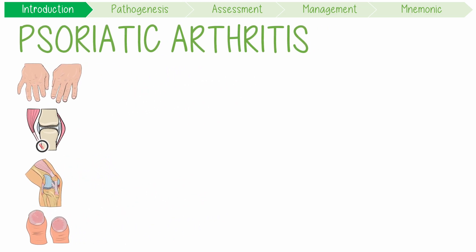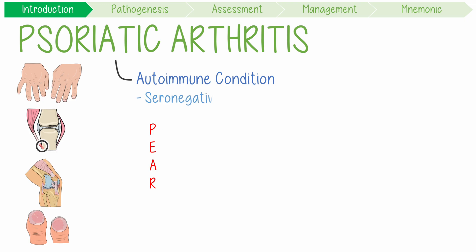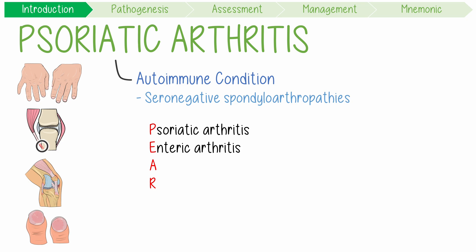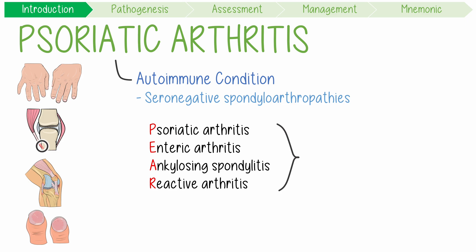It's classified into a group of autoimmune conditions called the PAIR diseases. They're formally described as four types of seronegative spondyloarthropathies, and they include psoriatic arthritis, enteric arthritis, ankylosing spondylitis, and reactive arthritis. All of these are associated with a specific gene called HLA-B27.